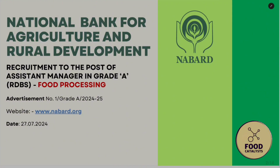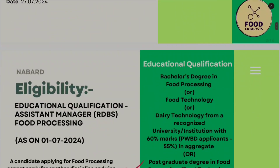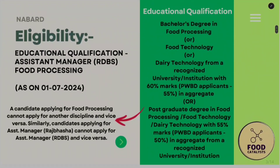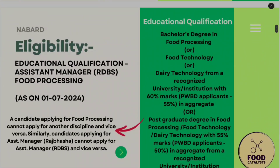The advertisement number is Grade A 2024-25. The website is www.nabard.org and the notification date is 27th July. Let's talk about the eligibility for this post of Assistant Manager.